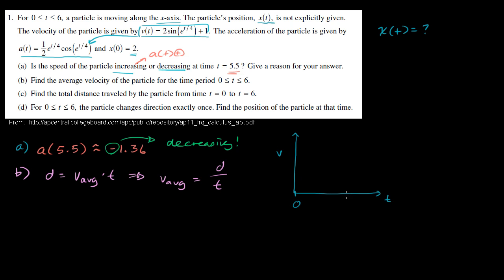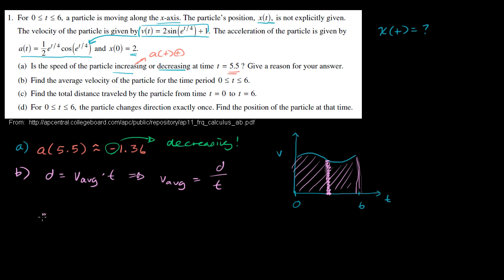We care about between time 0 and time 6. If you take any small time interval and multiply it by the roughly constant velocity over that period, the area of that little column tells you approximately the distance traveled over that small interval. So in general, the area under the velocity curve from 0 to 6 gives the total distance traveled. So d equals the definite integral from 0 to 6 of v of t dt.